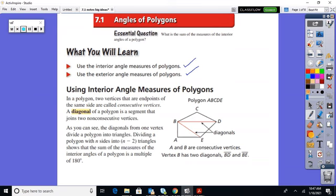The diagonal of a polygon is a segment that joins two non-consecutive vertices. So don't go B to C, but go BD, BE. Those are diagonals.